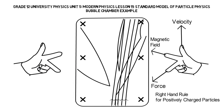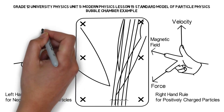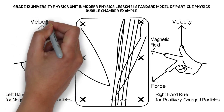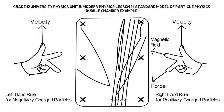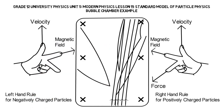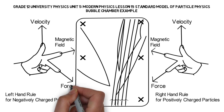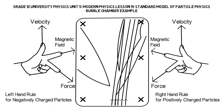They're feeling a force to the right, so let's check our left-hand rule. Thumb points in the direction of the kaon's velocity, index finger points in the direction of the magnetic field, and our middle finger points in the direction of the force — which in this case is to the right. And yes, our kaons are feeling a force to the right, so our kaons are negatively charged.